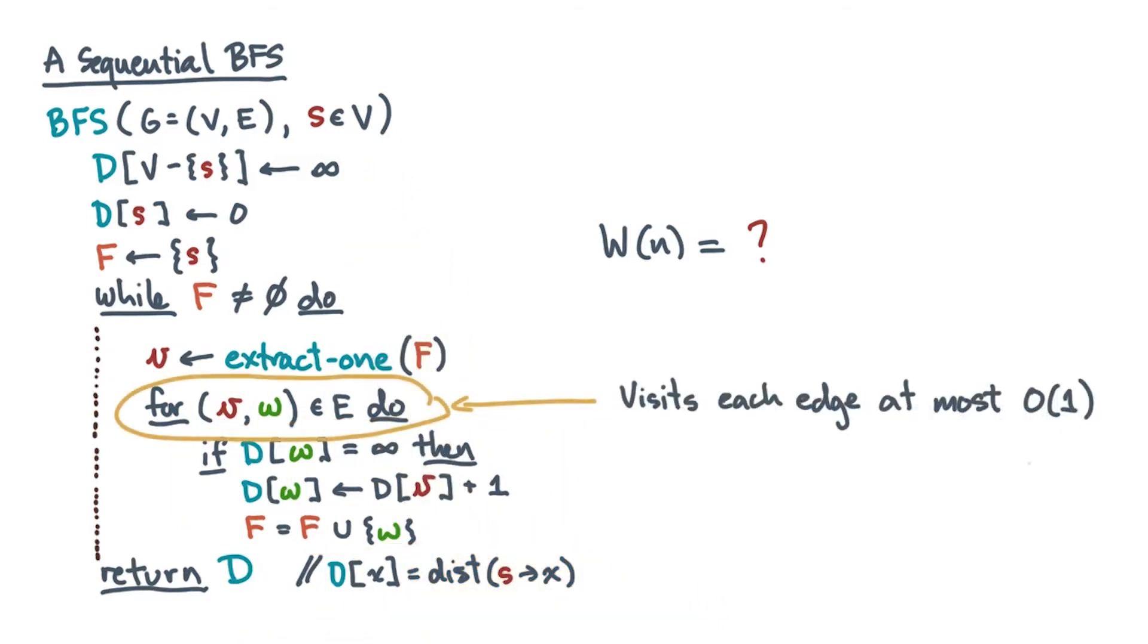And since each vertex appears in F at most once, we'll visit each edge at most once if the graph is directed or twice if the graph is undirected. That means that the body of the innermost for loop will be executed a total number of times that is at most big O of the number of edges.